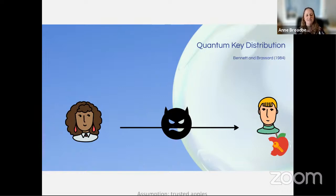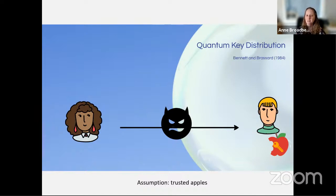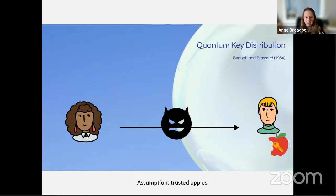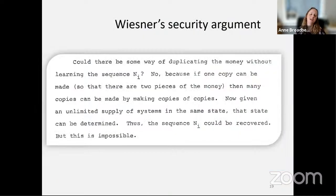The assumption here is trusted apples — a reference to what's happened in the past 10 to 15 years on device-independent quantum key distribution. Trusted apples is conventional QKD, and untrusted apples — where we don't know precisely how they're prepared — is the realm of device independence. Okay, that's it for QKD for today. Going back to Wiesner's security argument.